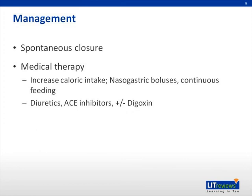Most VSDs will close spontaneously; however, there are options for symptomatic treatment. The goal is addressing congestive heart failure and failure to thrive. Target caloric intake should be increased to meet the children's increased metabolic demands. These children tend to have poor intake due to tiring while feeding, so nasogastric boluses or continuous feeding may be necessary in severe cases. Diuretics can be given to address fluid overload, and ACE inhibitors can be given to decrease afterload, thereby decreasing the volume of the shunt to the right heart. The use of digoxin for heart contractility in the setting of large defects is debatable.